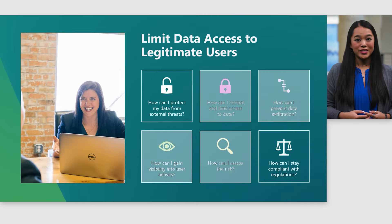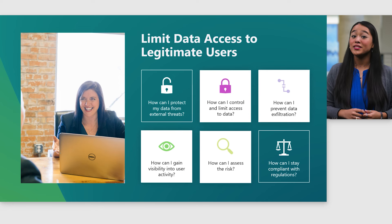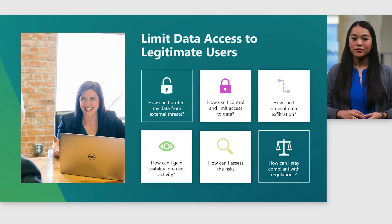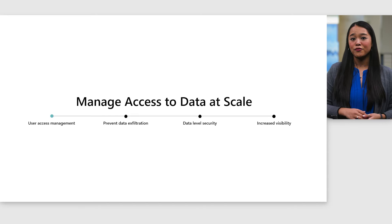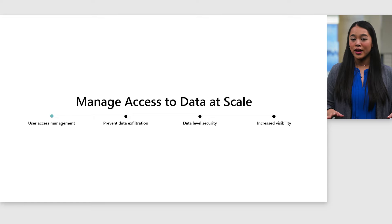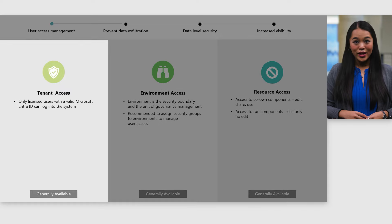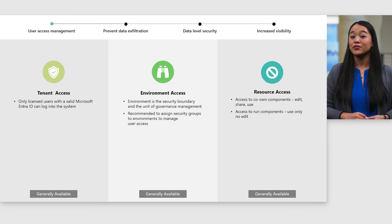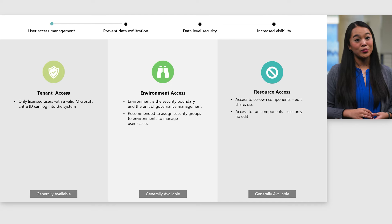Now that we covered the tools available to protect against external attacks, we will switch gear and look at some of the ways we can minimize the risks of data exfiltration. We will cover strategies that you can use to proactively limit data access to legitimate intentional users, as well as reactive mechanisms such as getting more visibility into user activity once data access is approved. Tenant-level access is the first level of security and leverages Microsoft Entra identities. The system looks for users to have an active account and checks for any conditional access policies that may prevent them from logging in. Not all users with an active and enabled account can authenticate into the platform — only the licensed ones. The next level is environment-level access.